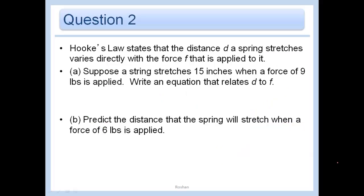Okay, an application of what we're doing. Hooke's law states that the distance D, a spring stretches, varies directly with the force F that is applied to it. So I guess first we should figure out what the independent and dependent variables are. So does the distance it stretches depend on the force, or does the force depend on the distance it stretches? The distance it stretches depends on the force exerted. So the distance depends on the force that is being applied. So the force will be our X coordinate, our independent variable, and the distance is the dependent variable.